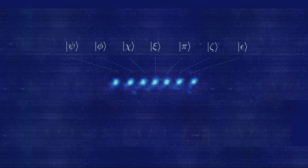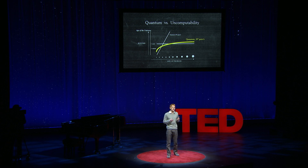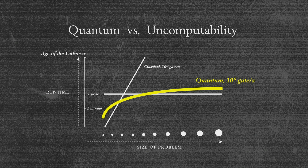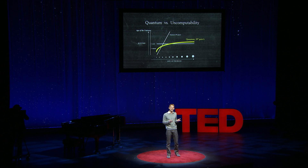Why do we do this? Well, the computers — even the supercomputers that we have today — cannot do every task that we throw at them. Here is an example from chemistry. As the size of the problem increases, the time taken on a supercomputer increases exponentially, and it rapidly hits the age of the universe.